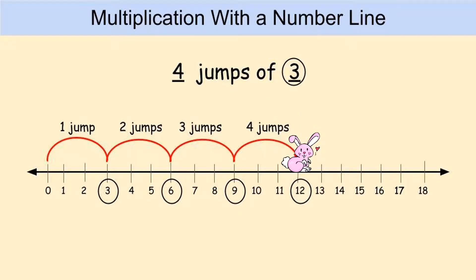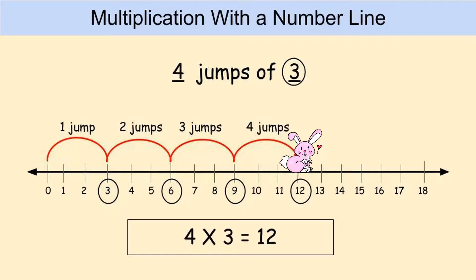Do you see how we jumped four times? The answer to your multiplication problem is whatever number you land on. In this case, the answer, or product, is twelve. Four times three equals twelve. That's all you do.